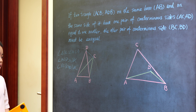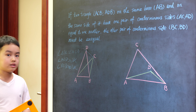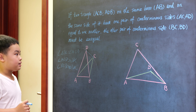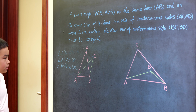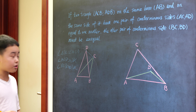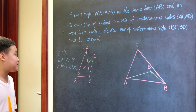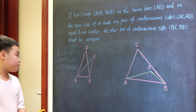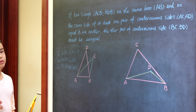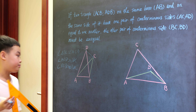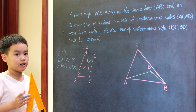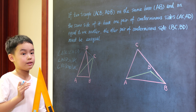Now, if BD is equal to BC, then triangle BDC will be isosceles. And then angle BDC should be equal to angle BCD. But we have proved that angle BCD is greater than angle BDC, which is absurd. So in this case, BD is not equal to BC.